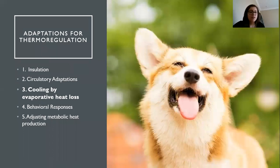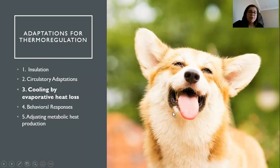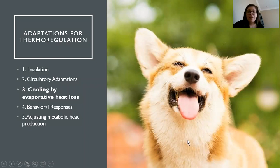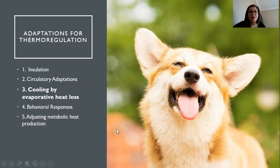The next adaptation for thermal regulation is evaporative heat loss. Like this little dog, many animals will pant for heat loss. Just like evaporation from my mouth in the snow, this little dog in heat will also pant to cool itself down. We don't really pant as humans, but we do sweat — and so do horses — and that's our way of cooling by evaporative heat loss.